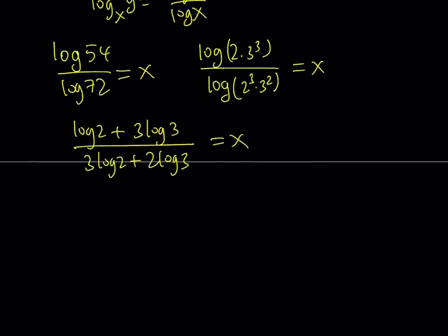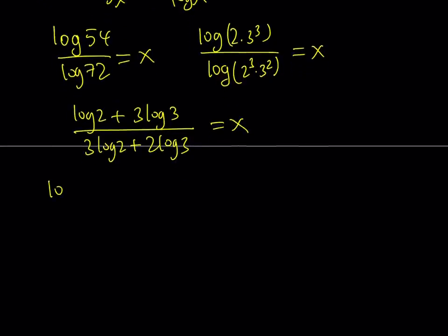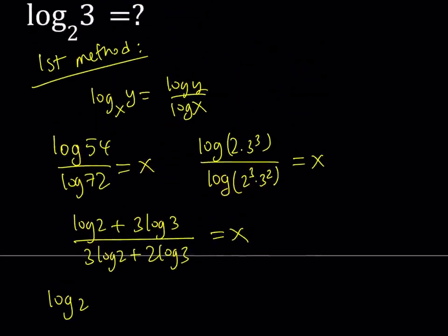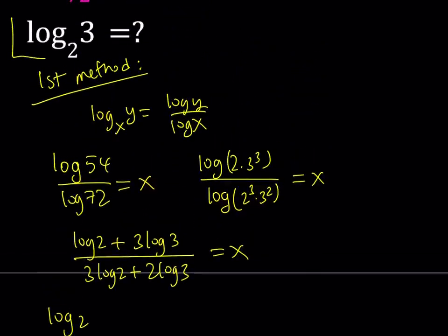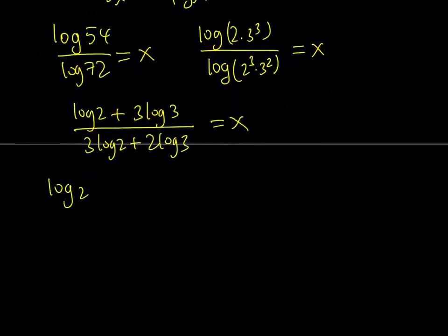Now we're going to go ahead and cross multiply here. My goal is to get log base 2 of 3 and I'm going to get that by using the change of base property backwards. So I can go ahead and write this as log 2 plus 3 log 3 equals 3 log 2 multiply by x plus 2 log 3 multiply by x.